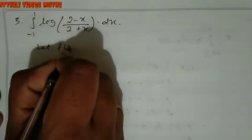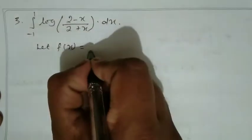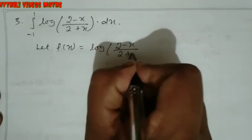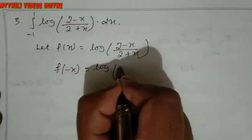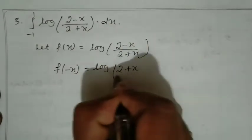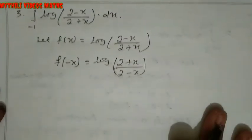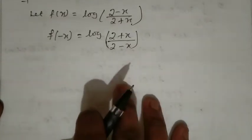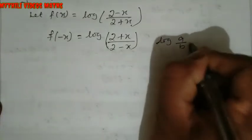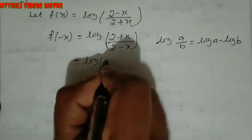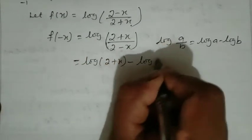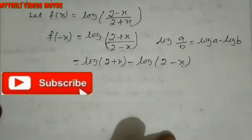Now the third sum: the integration from minus 1 to plus 1 of log((2 minus x)/(2 plus x)) dx. Let f(x) equal log((2 minus x)/(2 plus x)). Apply f(minus x): substitute minus x into the expression to get log((2 plus x)/(2 minus x)).